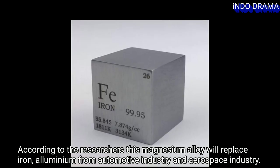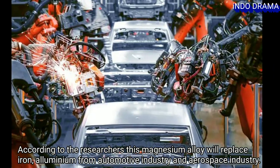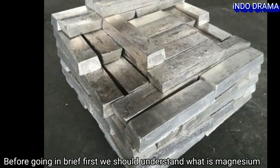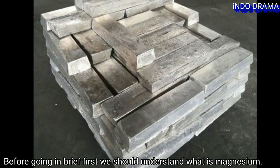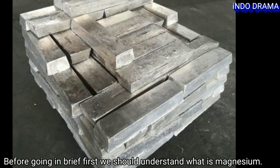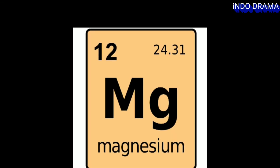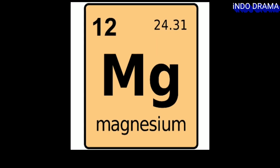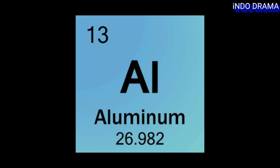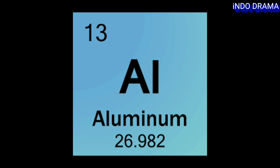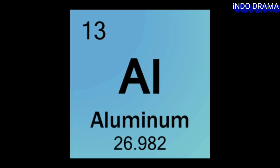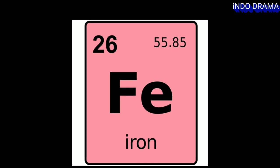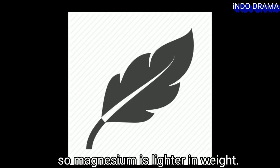According to the researchers, this magnesium alloy will replace iron and aluminium in the automobile and aerospace industries. First, we should understand what magnesium is. Magnesium, denoted by Mg, has an atomic mass of 24.305, which is lighter than aluminium at 26.98 and iron at 55.847, so magnesium is lighter in weight.